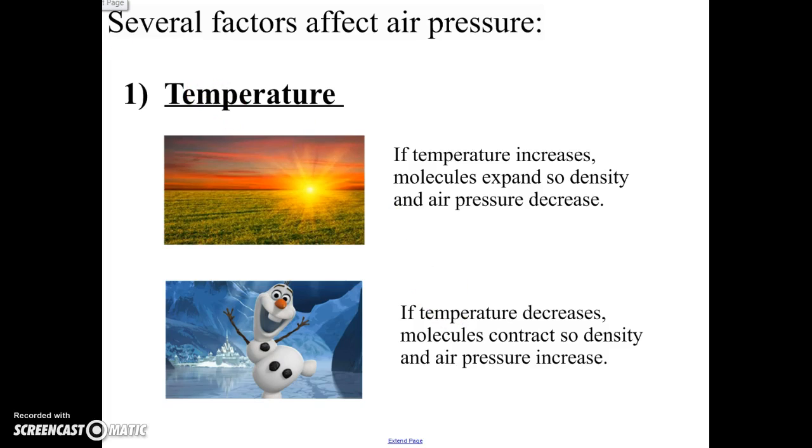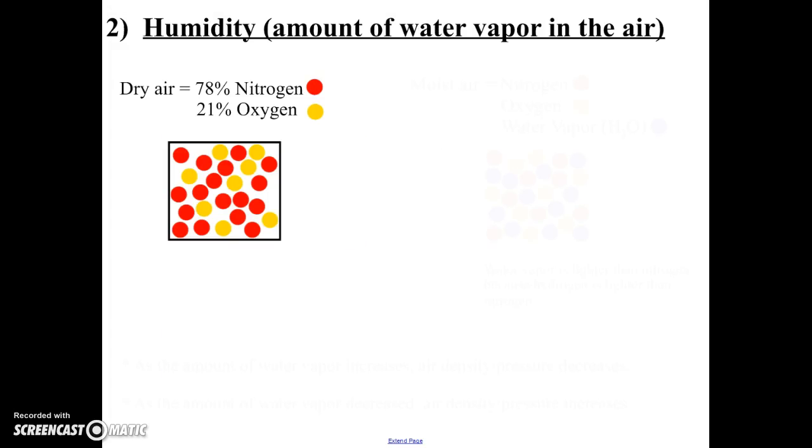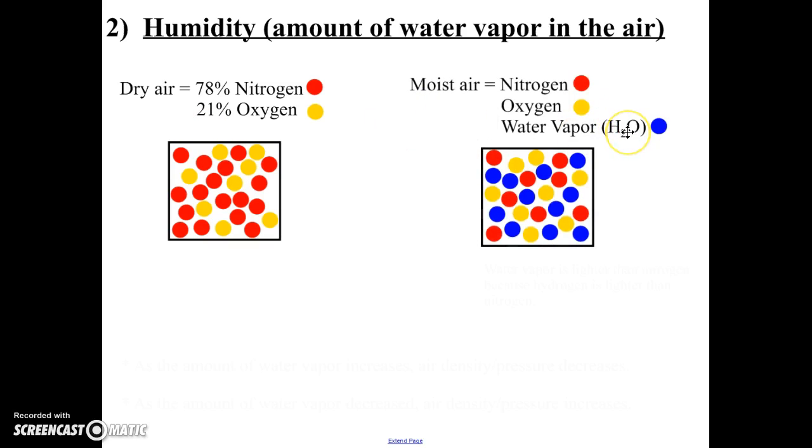The second factor that affects air pressure is the humidity or the amount of water vapor in the air. We know from our reference table that dry air is composed of 78% nitrogen and 21% oxygen and 1% other elements. When air is wet or moist, there's also water vapor in there.